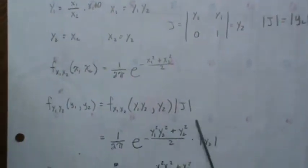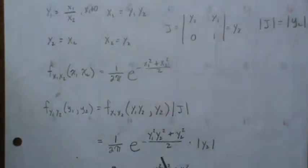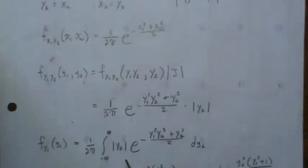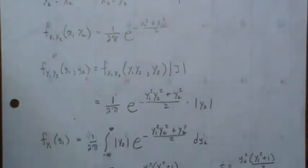We take it times the absolute value of the Jacobian, plug in all the information, we get this. Now we want to find just Y1, so we need to integrate out Y2.